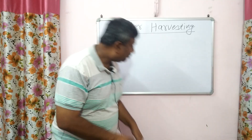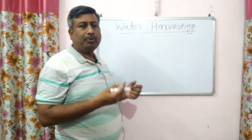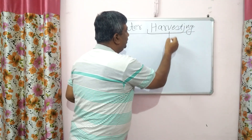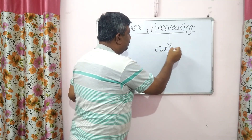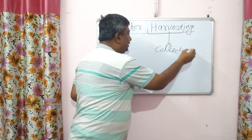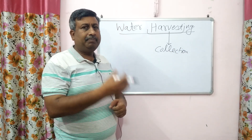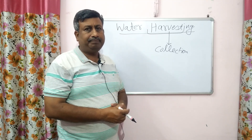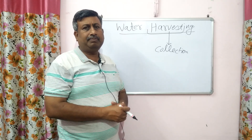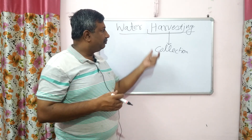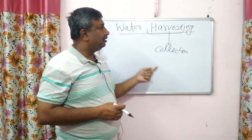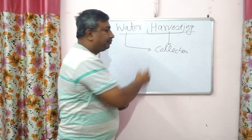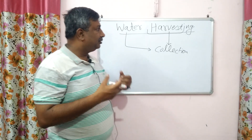The term 'harvesting' means the process of harvest. Now what is harvest? Harvest means collection. Harvesting means to collect anything. For example, we use the term 'crop harvesting,' which means collection of crop. So the term meaning is to collect. Now this is water, so it means water collection. Water collection is water harvesting.